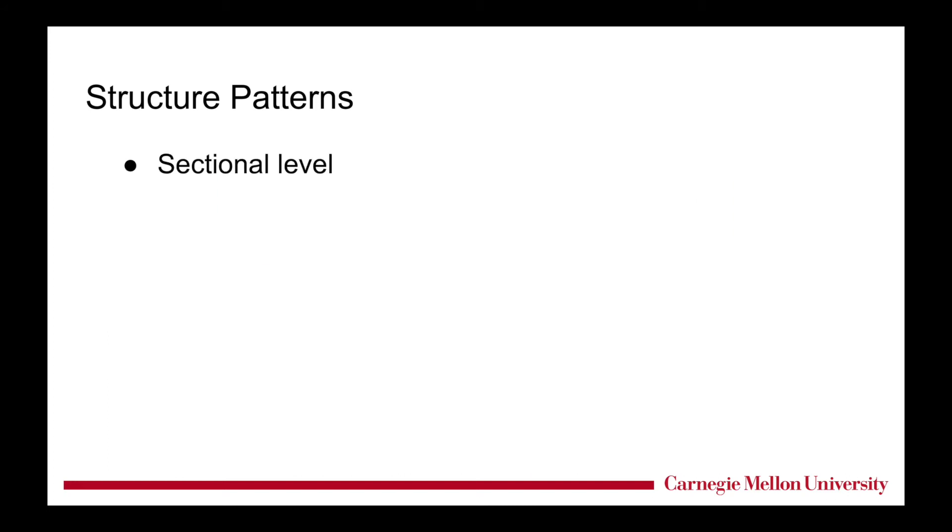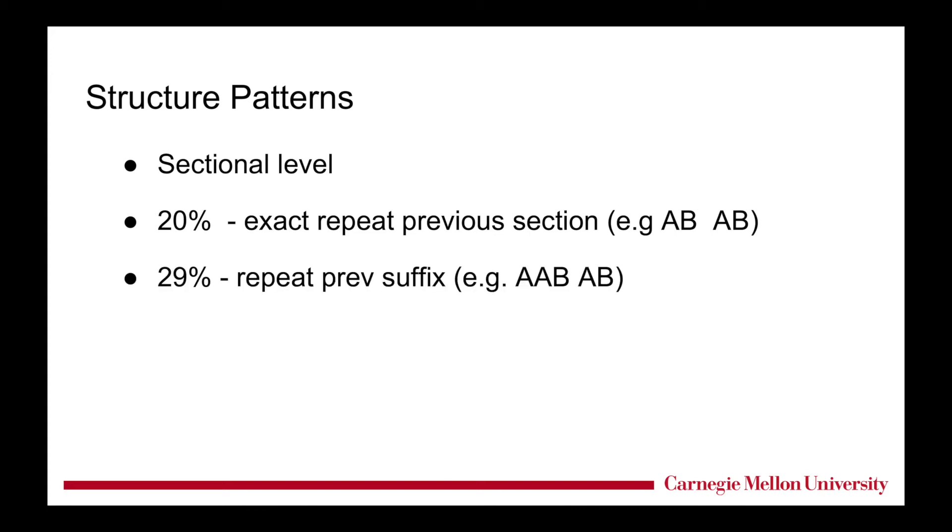And data further shows that 20% of the sections are exact repetitions of the previous section in terms of phrases. For example, the first section is AB, and the next one is also in the form of AB. While 29% of the successive sections repeat a suffix of the previous section. For example, AAB and the next section is AB.